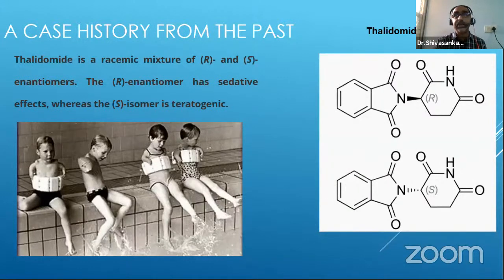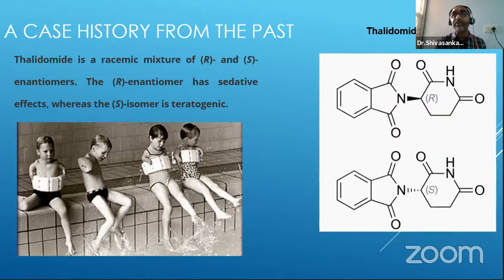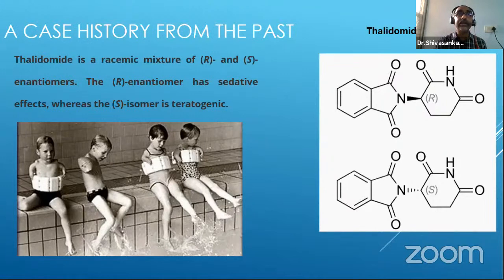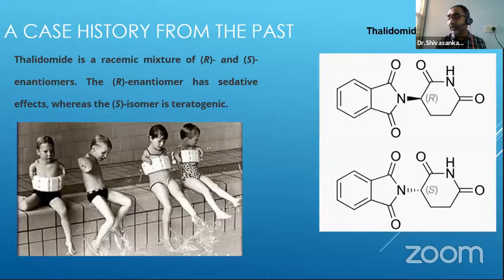There is another example — praziquantel. Praziquantel is another example wherein the R-isomer is an anti-helminthic drug. The R is slightly more active than the S. Dr. Shivapal also on the call — he also made a chiral compound. So that is also a chiral compound and one of the isomers is active.